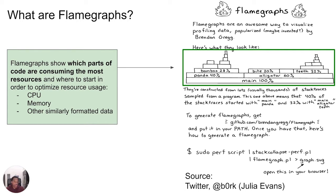Here you see there is one function called main. Above it there are two functions — alligator and panda. What this is showing is that of 100% of the time that main was running, alligator was running 60% of that time and panda was running 40% of that time. Main called these two functions, then alligator called bite, alligator called teeth, and one other function. You can see how this is a visual representation of what a stack trace would otherwise represent, and if you were trying to optimize this function, you would probably start with alligator because more time is being spent there.